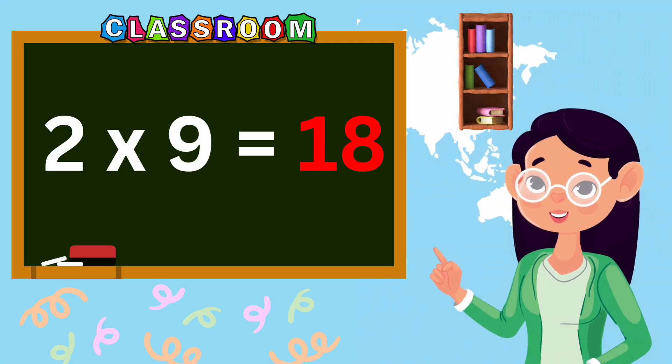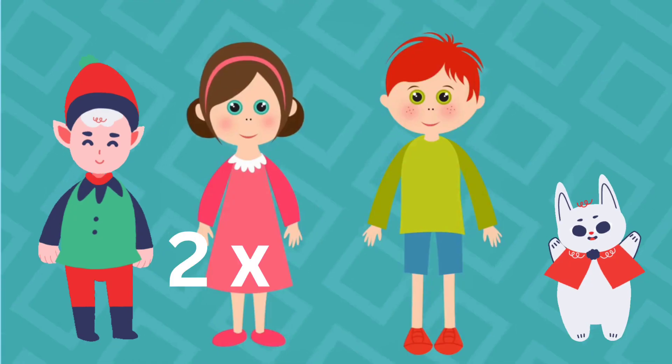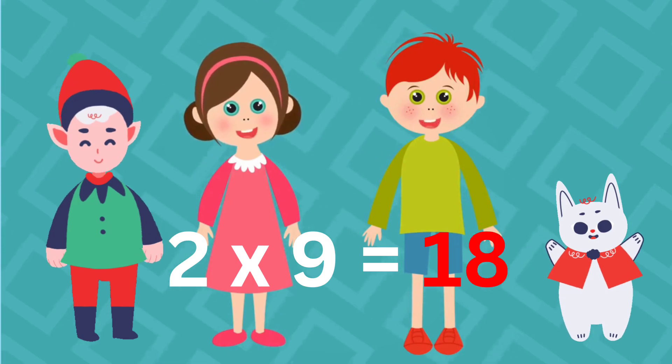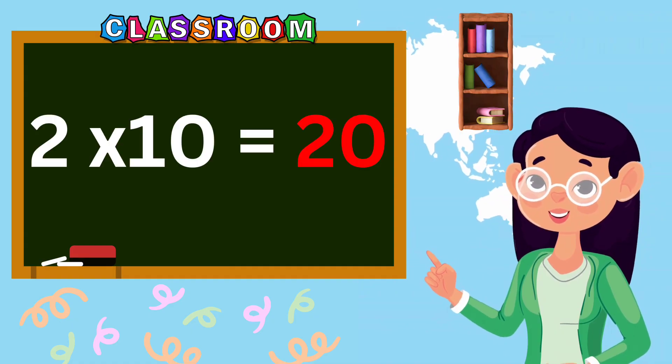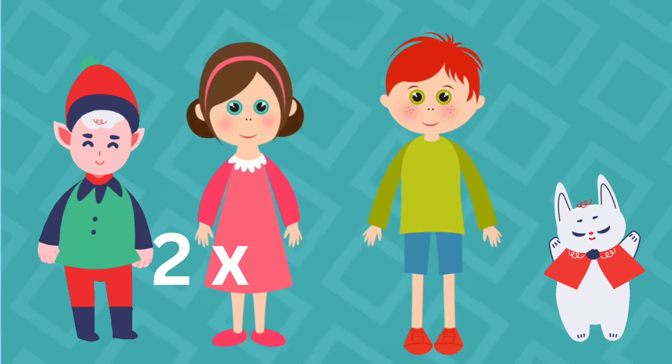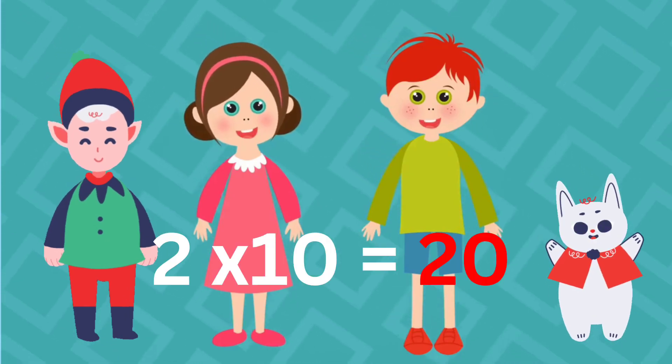Two nines are eighteen. Two nines are eighteen. Two tens are twenty. Two tens are twenty.